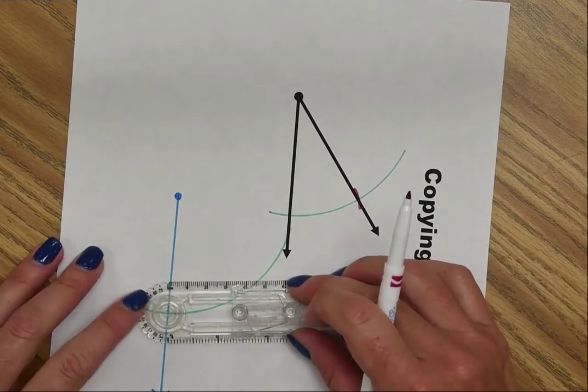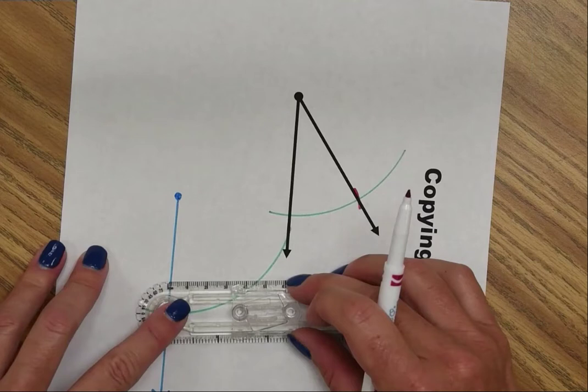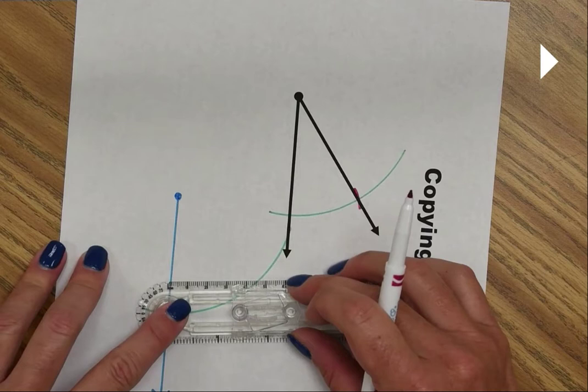Do not change the compass. You're going to transfer this measurement to your new ray by putting the bullseye on the intersection of the blue and green line and making an arc across the green arc.